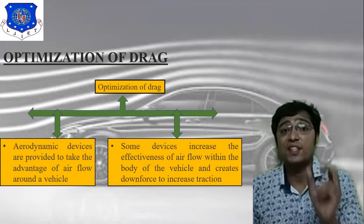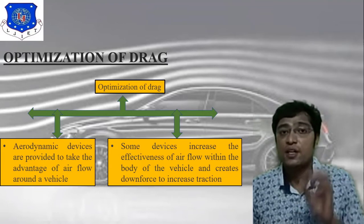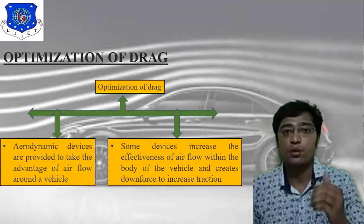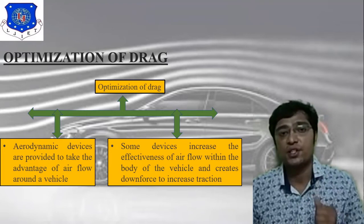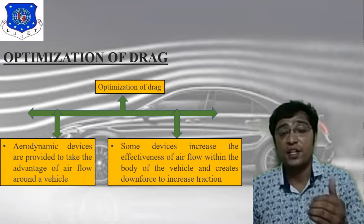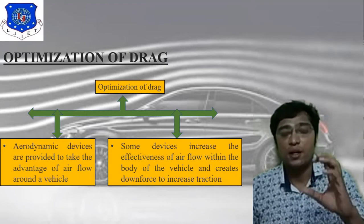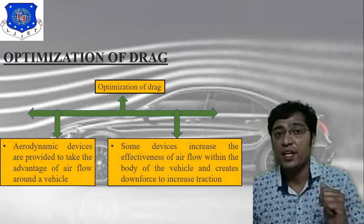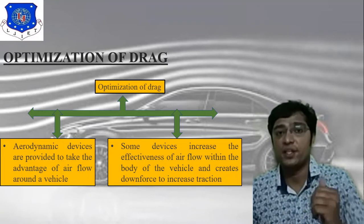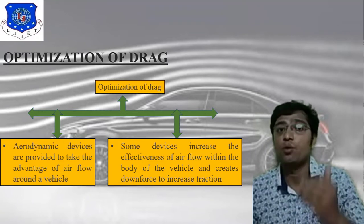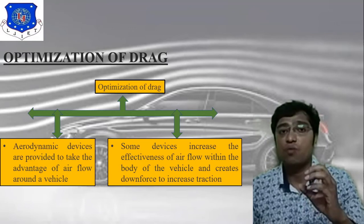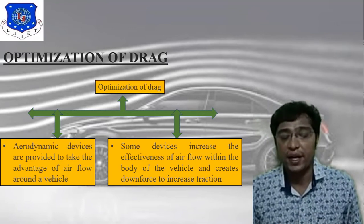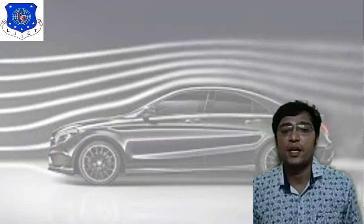What is traction? Traction is generally related to friction — friction between the car wheel and the road surface. This is what optimization of drag means.